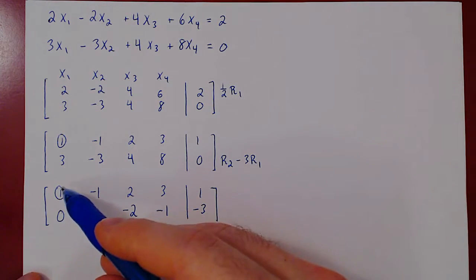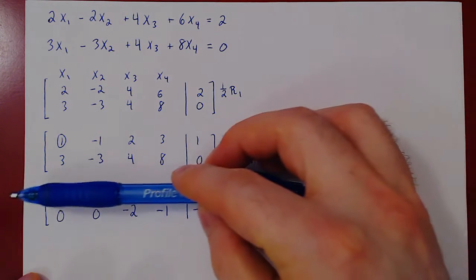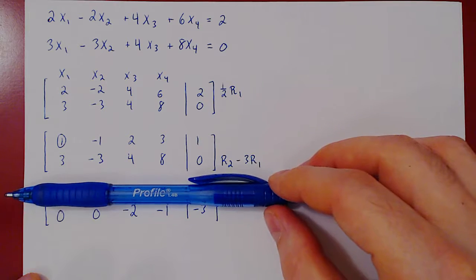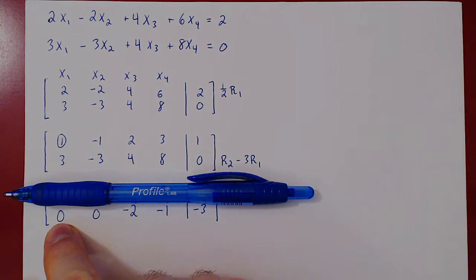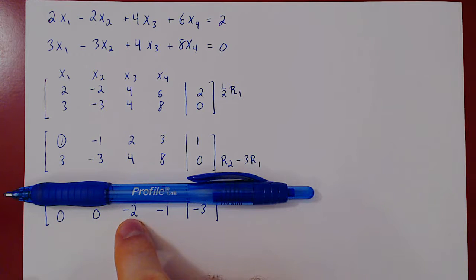So we have our first leading one, we've killed all the entries below it. So we ignore that row, and we repeat. We can't get the leading one here, neither here. Here's our first non-zero entry. The only way to turn this into a leading one, as it is a single-line entry, is to multiply the row by negative 1 half.